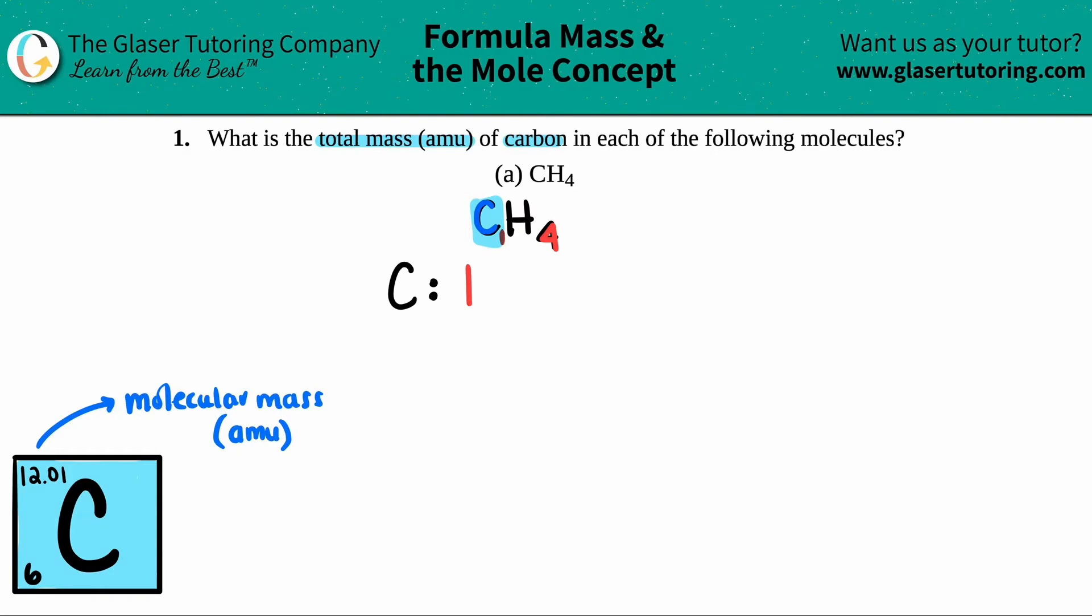And now to find the total mass, you're just going to take that many that you have and multiply it by the molecular mass in AMU on the periodic table. So on my periodic table, I have 12.01, and that's an AMU. And that's it. I only have one carbon, and each carbon weighs 12.01 AMUs. So the total mass would be 12.01 AMU. And that's it. So starting off easy on this chapter. I love it. What do you guys think? This one was easy.